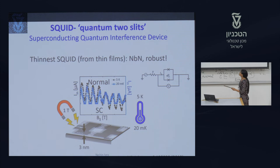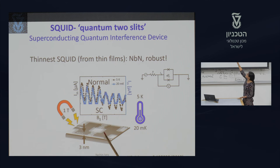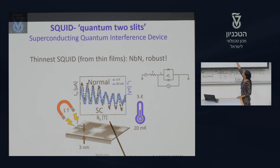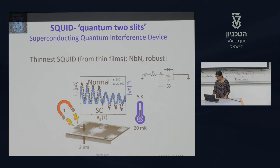With two Josephson junctions in parallel forming a SQUID device, by applying a magnetic field we can measure the current and observe a sine wave function, and see the material transition from the superconducting state to the normal state, which means the SQUID is working.